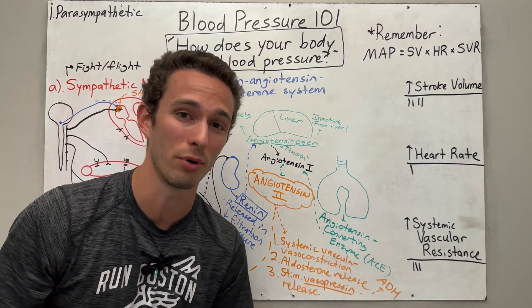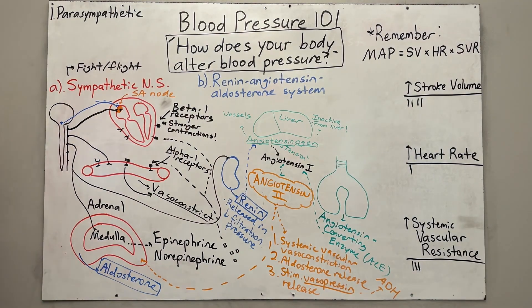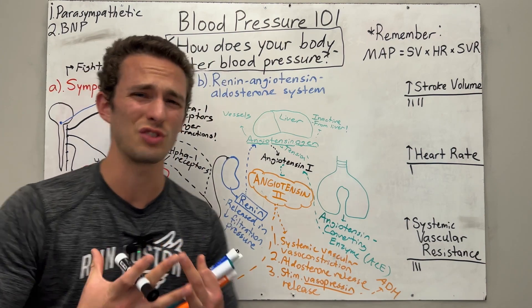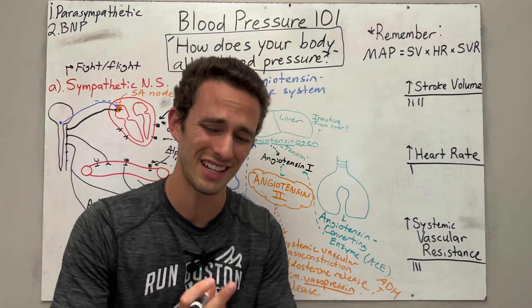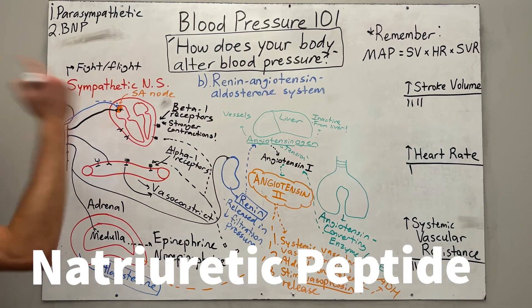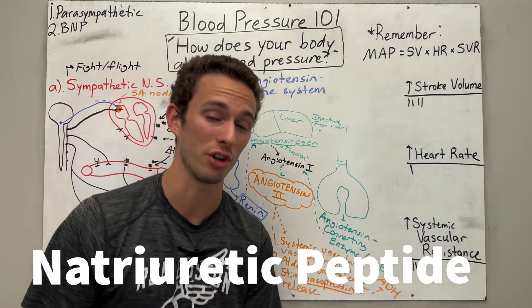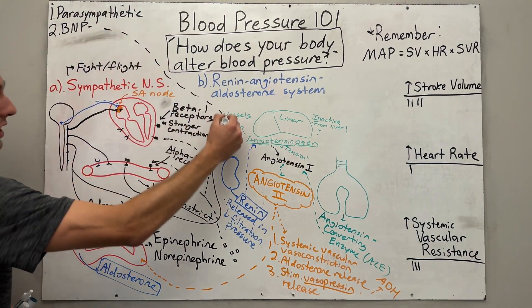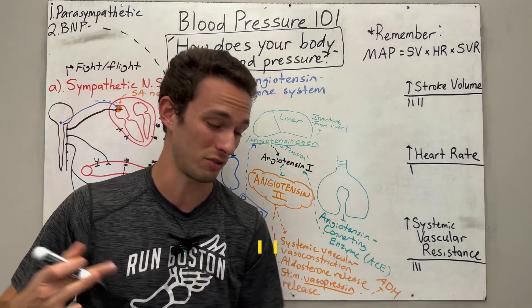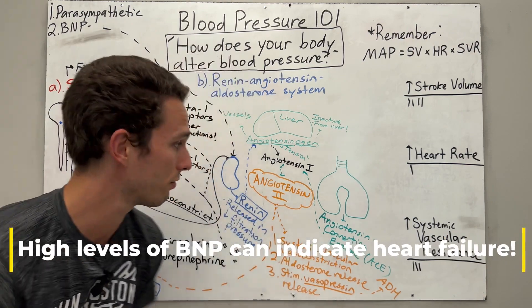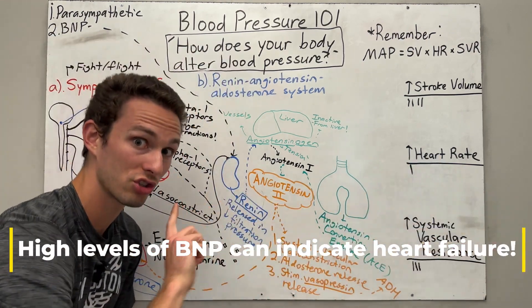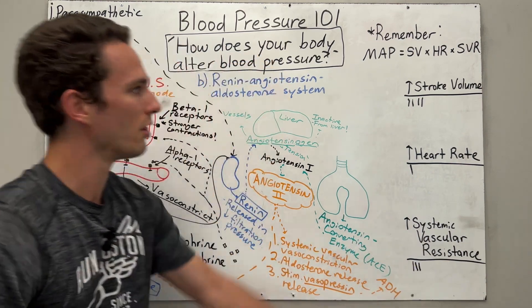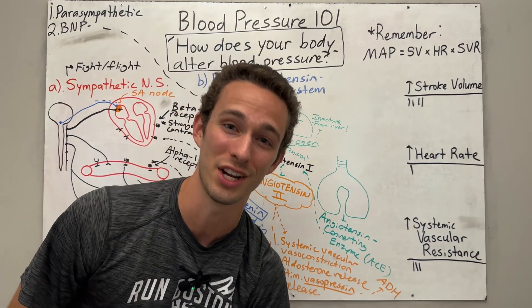The second way is the secretion of a hormone called BNP — brain natriuretic peptide, which means salt protein. This is released from your heart whenever your heart is working really hard and getting over-distended. It goes to the kidneys and tells them we have too much blood in our system, therefore start excreting out more salt, thus excreting more fluid, thus decreasing blood volume, decreasing stroke volume, and decreasing blood pressure.